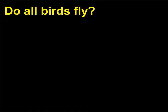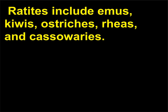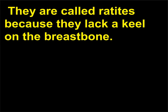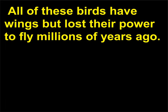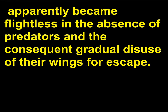Do all birds fly? No. Among the flightless birds, the penguins and the ratites are the best known. Ratites include emus, kiwis, ostriches, rheas, and cassowaries. They are called ratites because they lack a keel on the breast bone. All of these birds have wings but lost their power to fly millions of years ago. Many birds that live isolated on oceanic islands — for example, the great auk — apparently became flightless in the absence of predators and the consequent gradual disuse of their wings for escape.